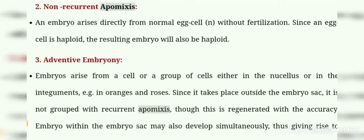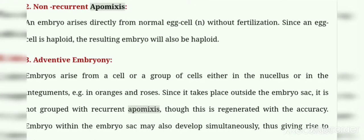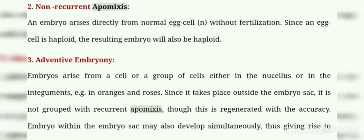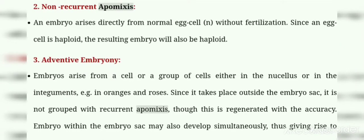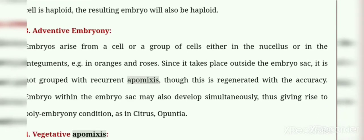Second is Non-recurrent Apomixis. When embryo arises directly from a normal egg cell, which is haploid — the embryo develops from a normal haploid egg cell without fertilization. This is called non-recurrent apomixis. Since the egg cell is haploid, the resulting embryo will also be haploid.